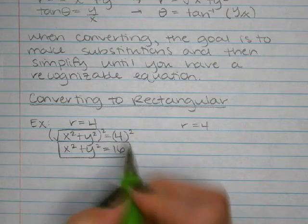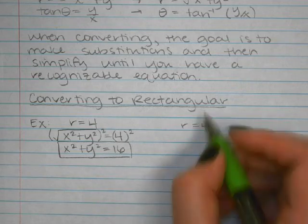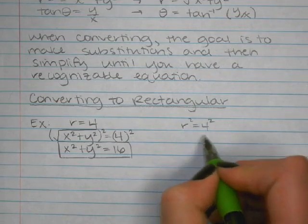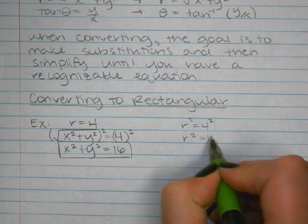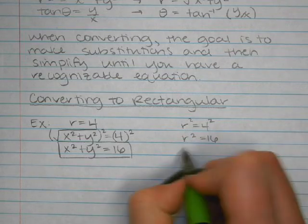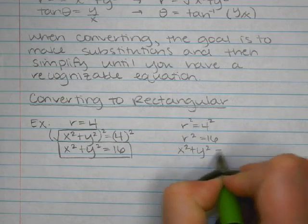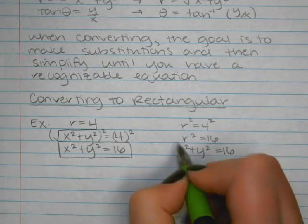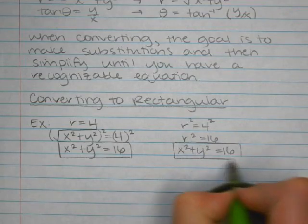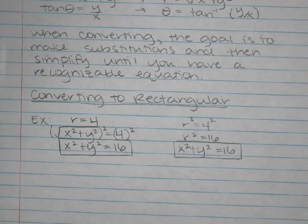The other option for doing this conversion is to start off by squaring each side, giving R² = 16. Then substitute x² + y² for R² to get x² + y² = 16. Either way, you get the same answer in the same number of steps, so it just depends on what feels most natural to you.